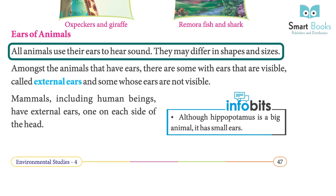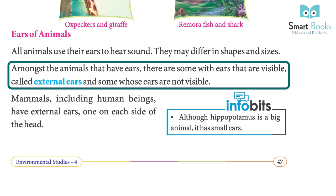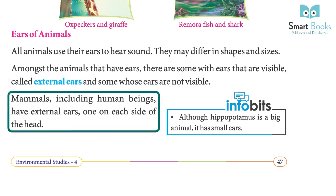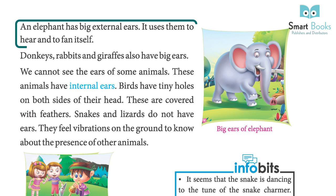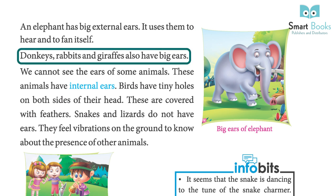Ears of animals: all animals use their ears to hear sound, though ears may differ in shapes and sizes. Among animals that have ears, some have visible ears called external ears, and some have ears that are not visible. Mammals, including human beings, have external ears — one on each side of the head. Although the hippopotamus is a big animal, it has small ears. An elephant has big external ears, which it uses to hear and to fan itself.